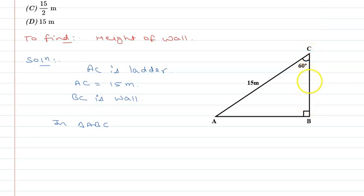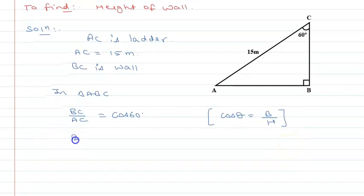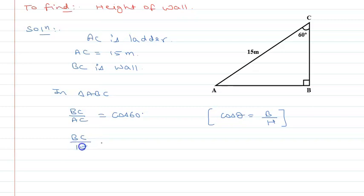BC upon AC will be equal to... For this angle, BC is the base and AC is the hypotenuse. Base upon hypotenuse is cos theta, and theta is 60 degrees. So cos theta equals base upon hypotenuse. AC is 15, and cos 60 is equal to 1 upon 2. If we cross multiply, BC will be equal to 15 upon 2 metres.